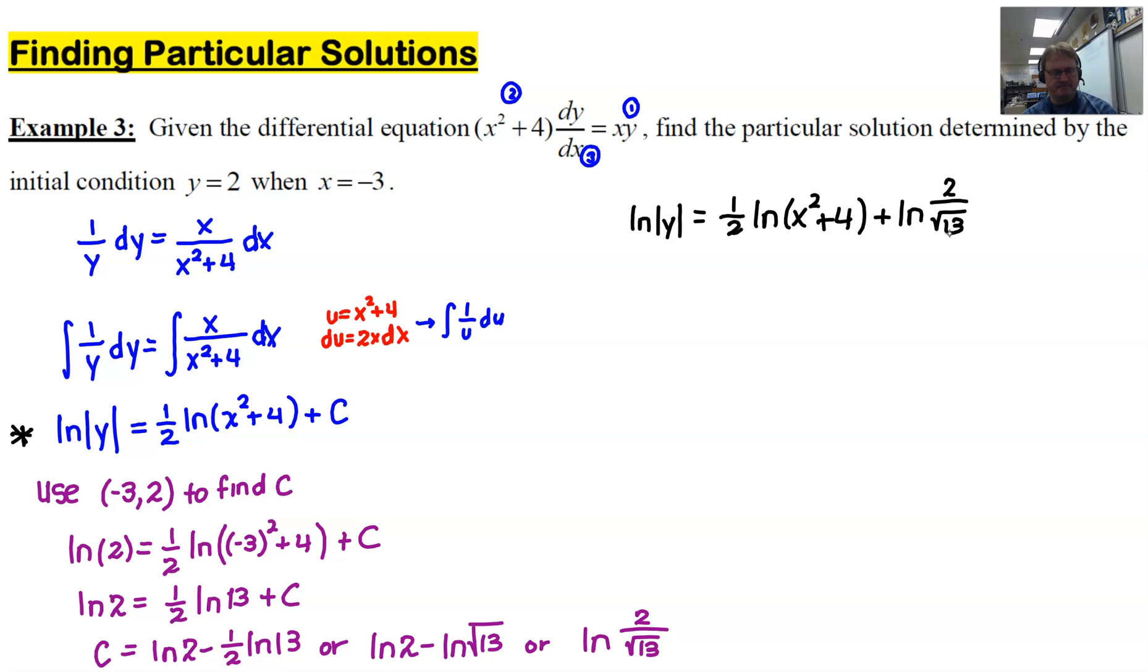The only thing we have left to do is we've got to solve this for y. We need to get y by itself. Now there are a couple of different ways you can do that, but the way that I like to teach is use the exponential base. What that means is we're going to use e as a base and apply that to both sides of this equation. The right side is a pretty robust power of e. All of this that I'm highlighting is the exponent of e.